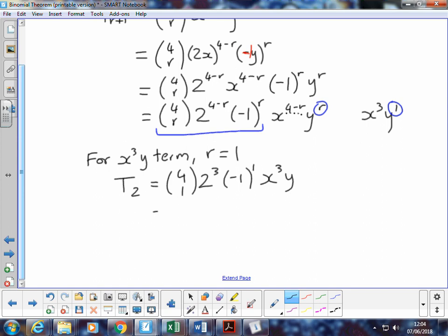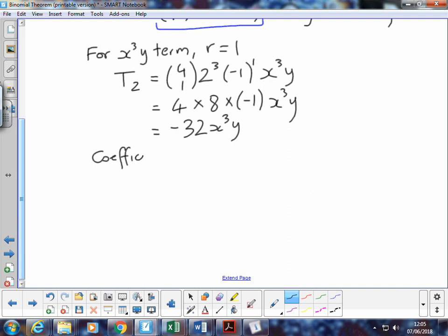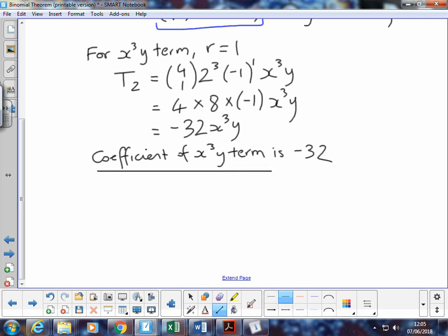Which means that the last thing we have to do is to calculate the value of the coefficient. 4 choose 1 is 4 multiplied by 2 cubed is 8 multiplied by negative 1 to the power 1 is just negative 1, which means that 4 times 8 times negative 1 is negative 32. And we've still got our x cubed y. Okay, so the second term, if we were to expand it all out, the second term would be negative 32 x cubed y. But the question did say find the coefficient. It didn't say find the whole term. So we can actually write that down. Coefficient of x cubed y term is negative 32. Underline it with a flourish. There's your answer.